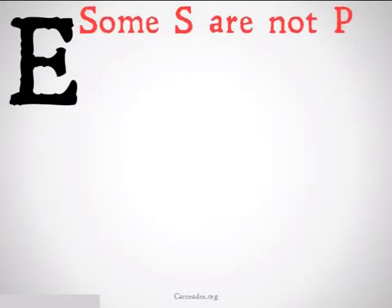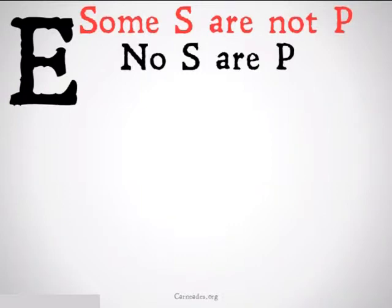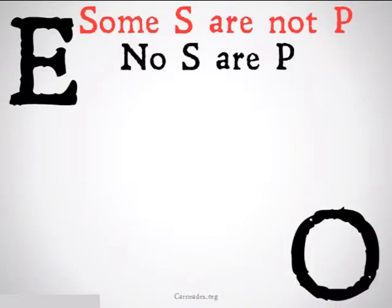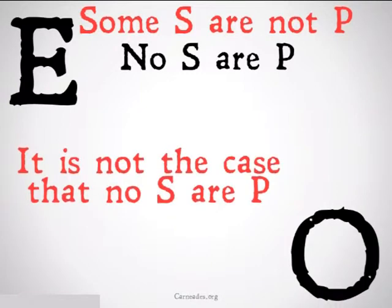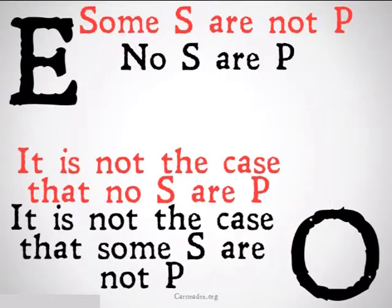Let's take a look at the examples. If we go from 'Some S are not P' to 'No S are P,' we've committed the fallacy of illicit subalternation — in the same way we would if we went from 'It is not the case that no S are P' to 'It is not the case that some S are not P.'